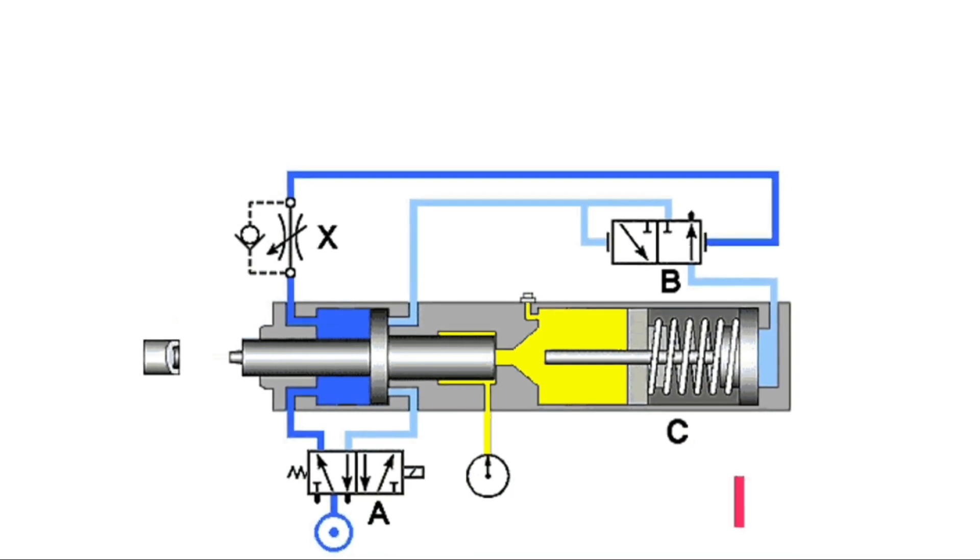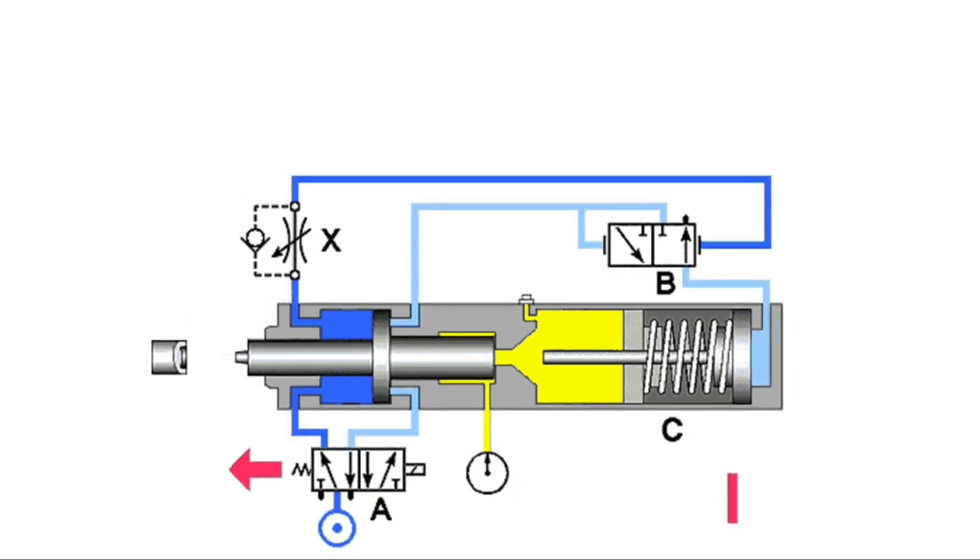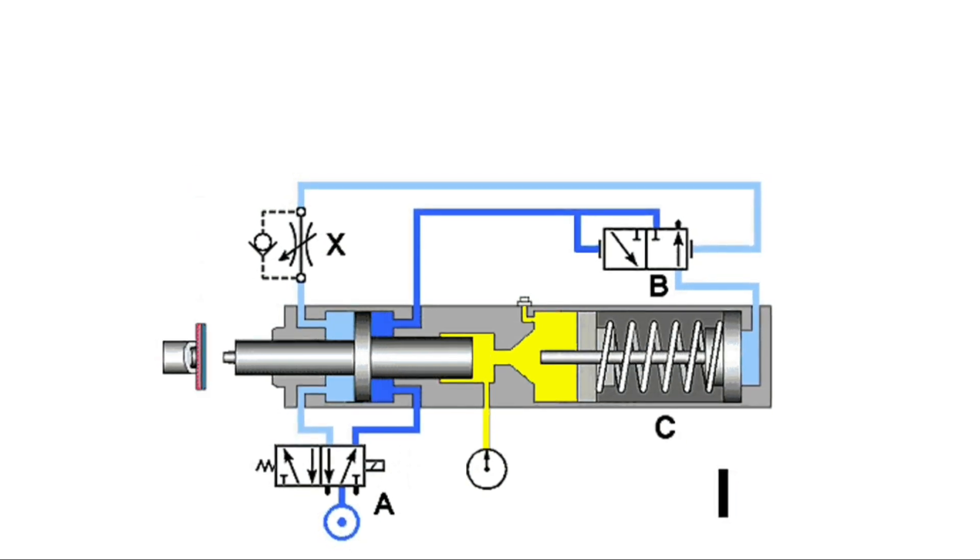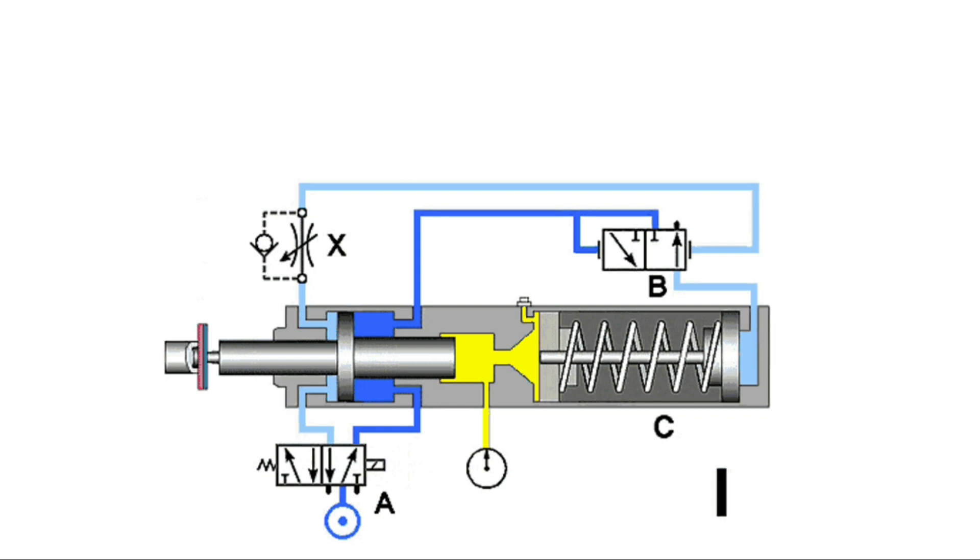The spring diaphragm pneumatic actuator consists of a diaphragm and plate that are connected to an actuator stem. A flexible diaphragm is enclosed in pressure-tight housing.